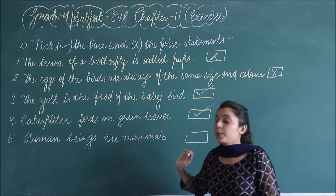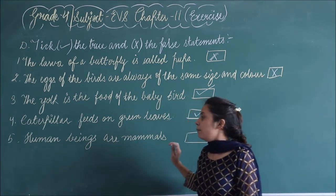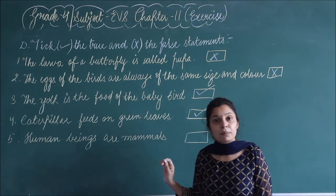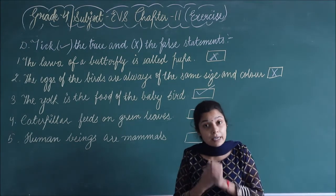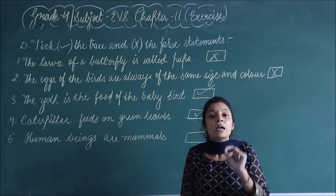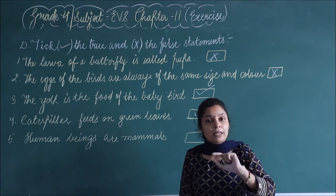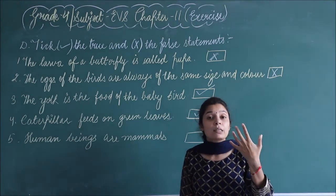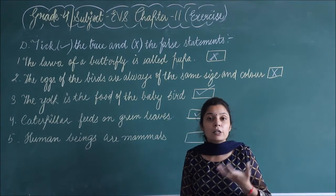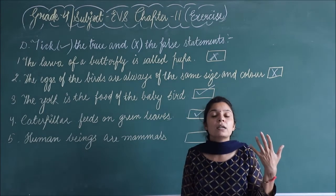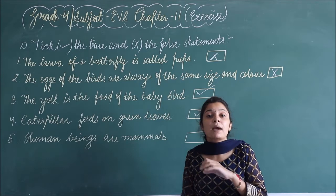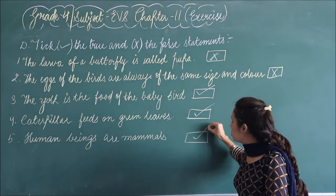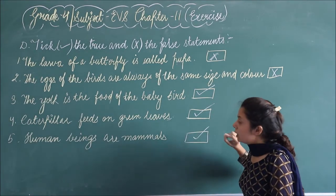Last question: human beings are mammals. Jo human being hai, wo mammals hain. Yes, human beings are mammals because wo directly apne young ones ko birth dete hain, aur unka dhyan rakhte hain jab tak wo apne aap sab cheezein manage karna na seekhe. So this is also correct — tick.